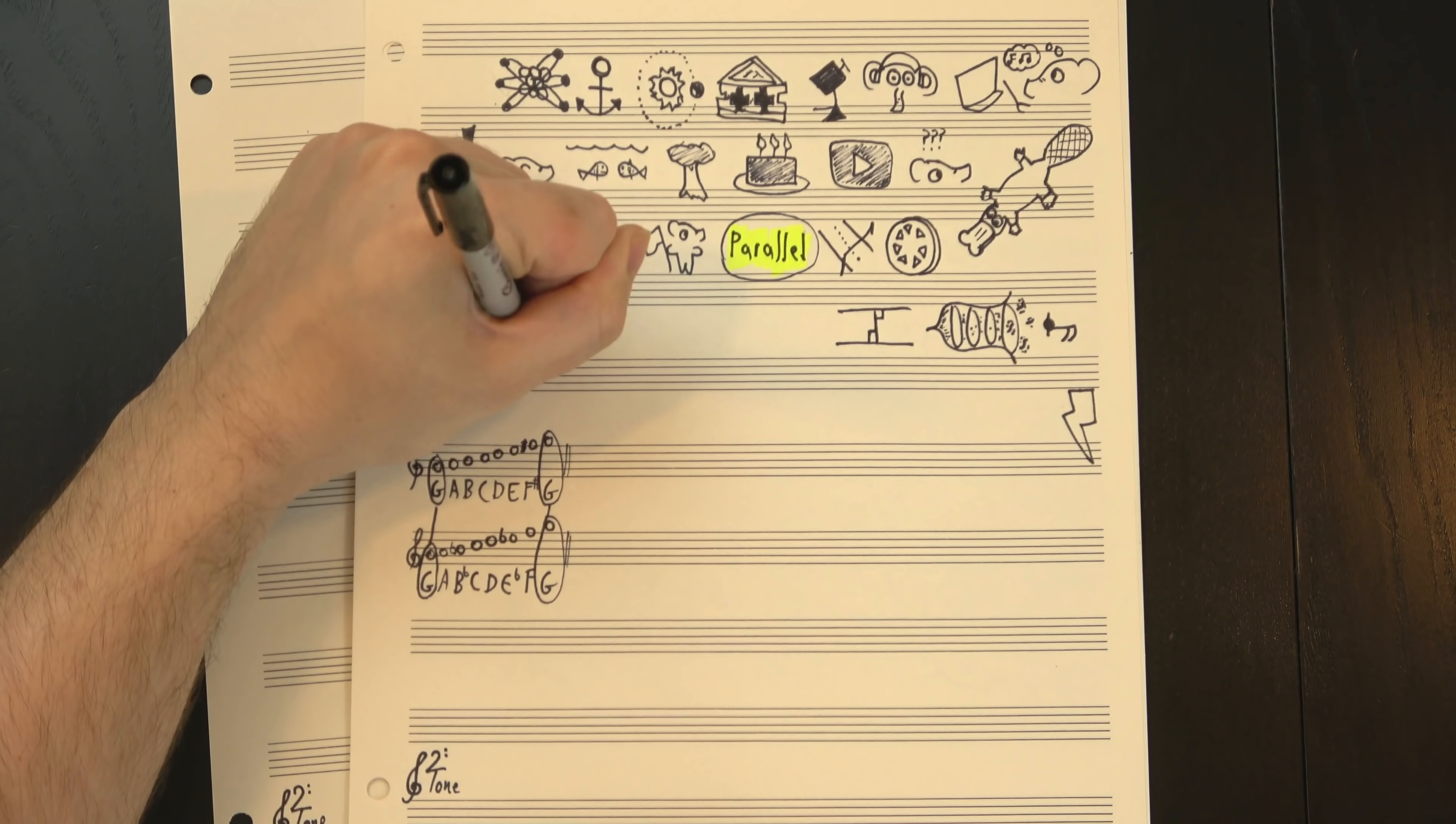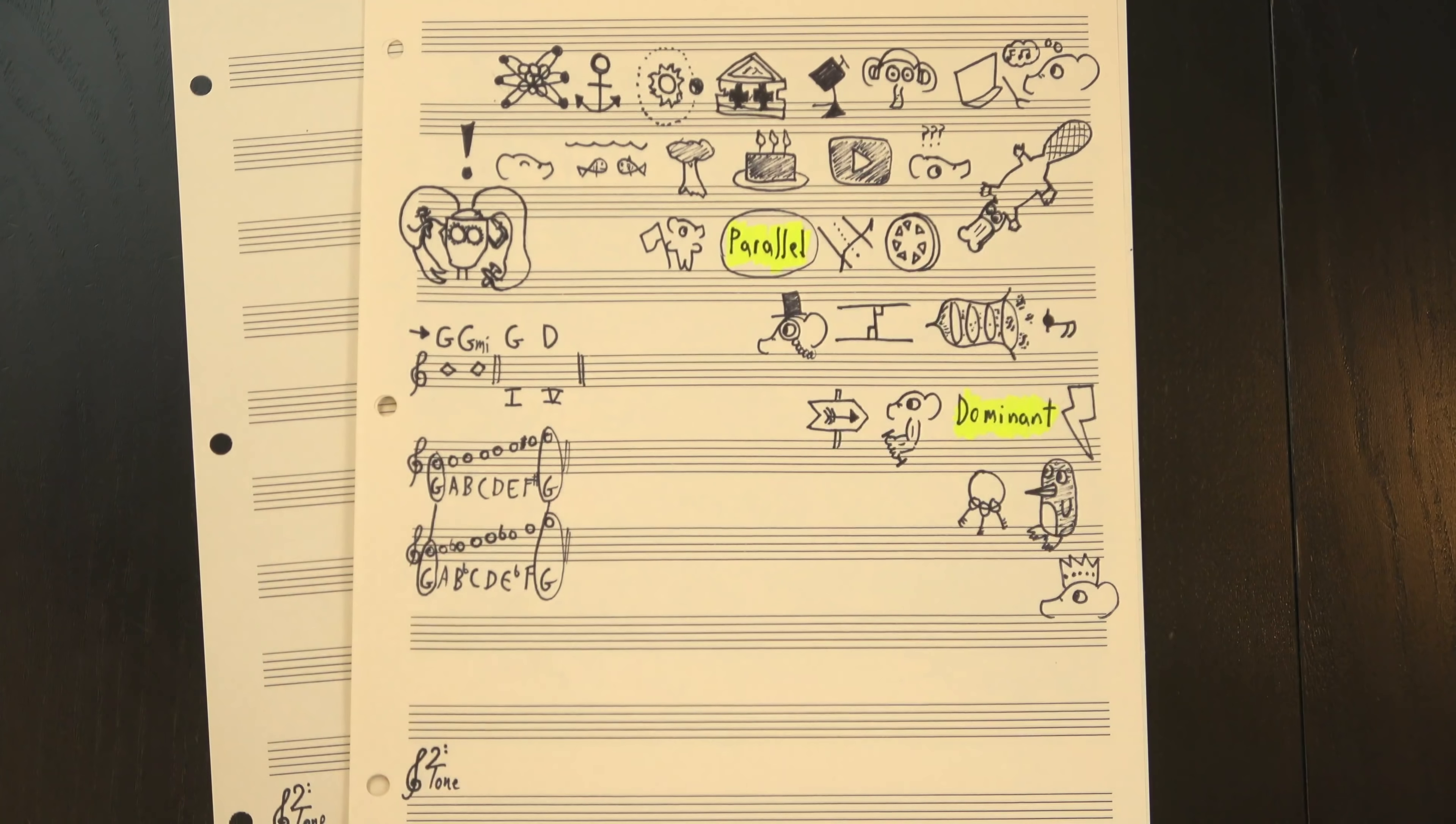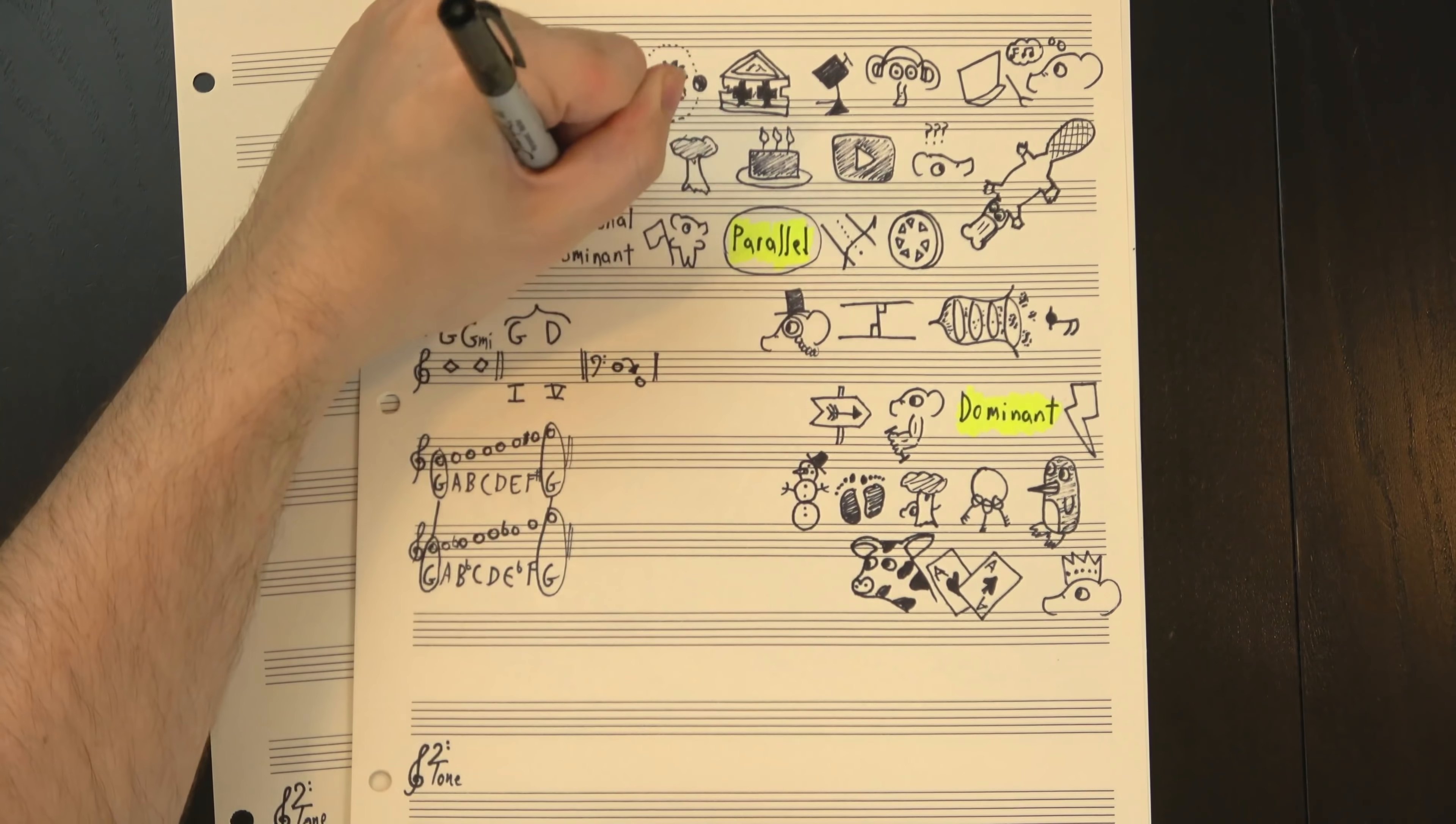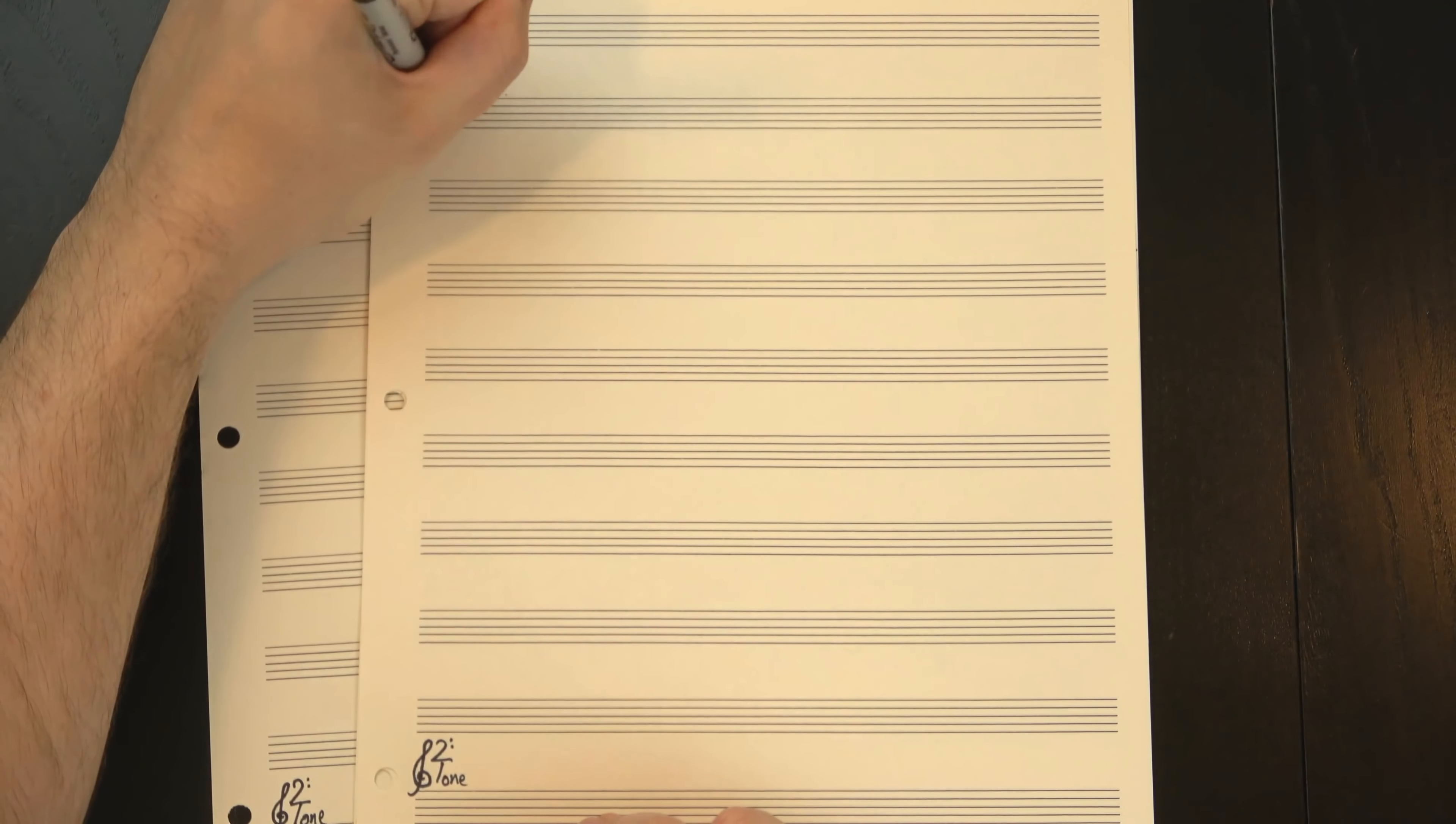Next, let's look at chords a perfect fifth apart, so some sort of G chord and some sort of D chord. As a category, I'm gonna call these dominant relationships. To me, there's two defining sounds in a dominant relationship. The first is the perfect fifth motion in the bass. The less obvious one is the half-step motion between the third of one chord and some other note in the other. We can see this clearly if we look at G major and D major, which I'll call the traditional dominant.